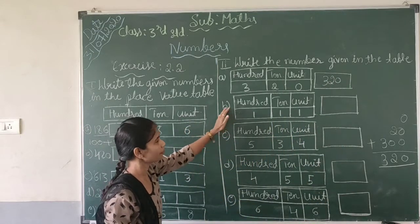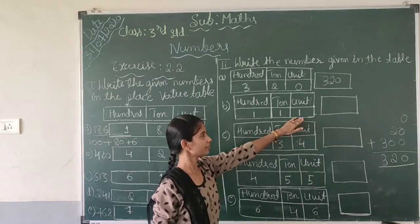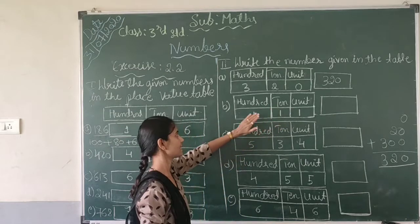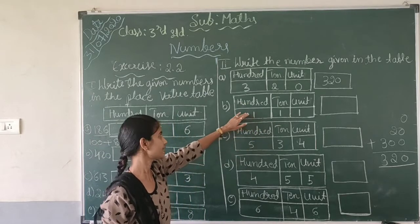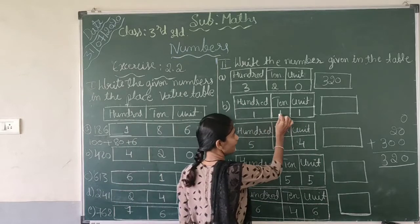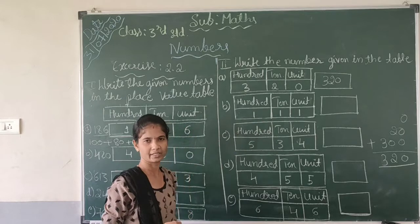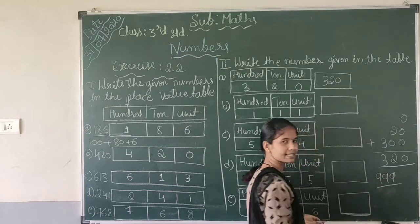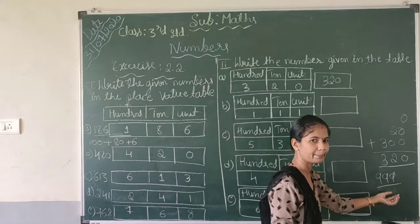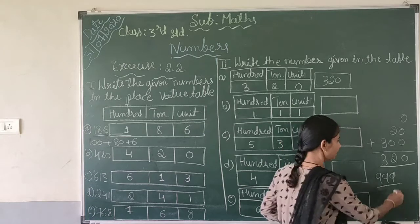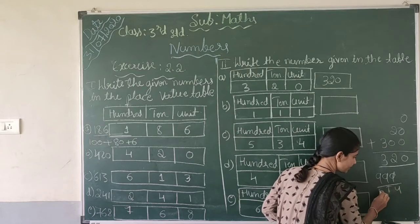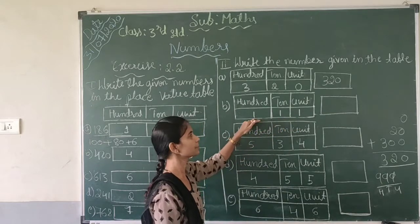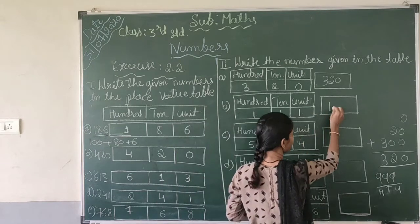Next, second one: 1 is in the units place, 1 is in the 10's place, and 1 is in the 100's place. See, all numbers are the same but the place value is different. Like 999 — all digits are 9 but one 9 is in units, one 9 is in tens, and one 9 is in hundreds. So here 1 is in units, 1 is in 10's, and 1 is in 100's. Total answer is 111.